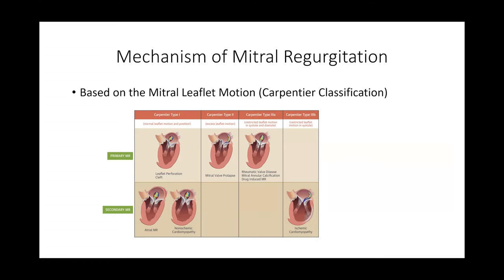In Carpentier Type 1, the leaflet motion and position are normal. Primary MR in Type 1 is likely a leaflet perforation or cleft, while secondary MR includes volume overload dilatation or non-ischemic cardiomyopathy. In Type 2, there's excess leaflet motion, for example mitral valve prolapse. In Type 3, there's restricted motion: Type 3a is restriction in both systole and diastole — mainly mitral annular calcification or rheumatic valve disease — while Type 3b is restriction only in systole, typically ischemic cardiomyopathy.